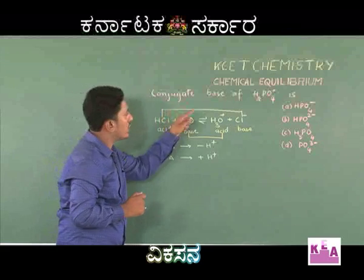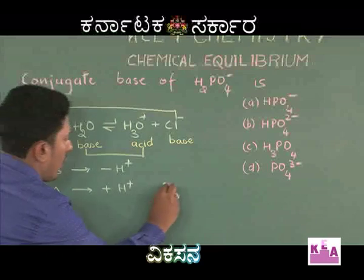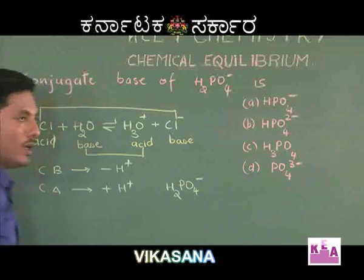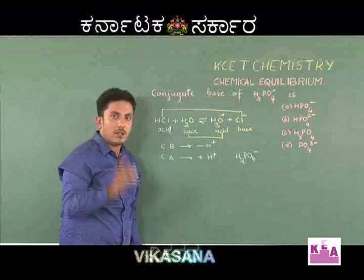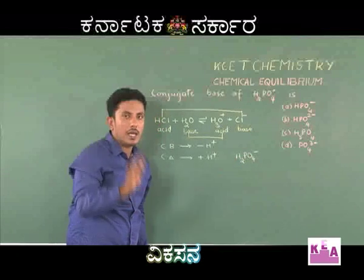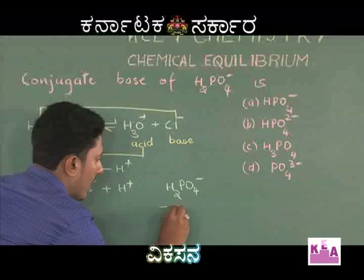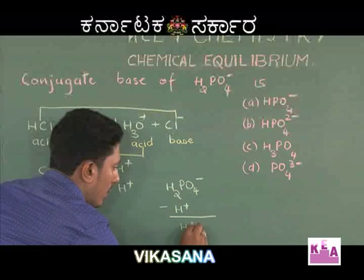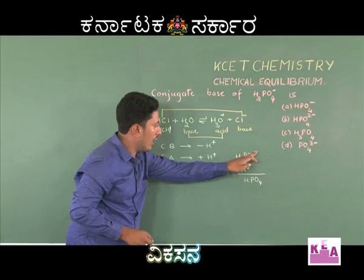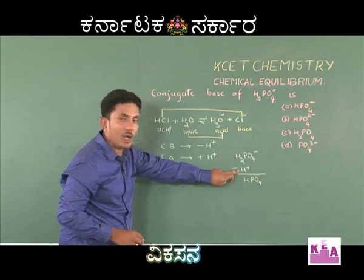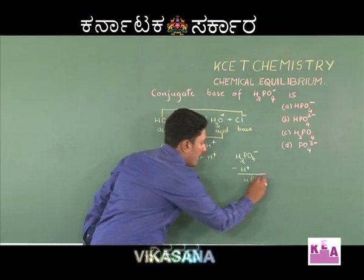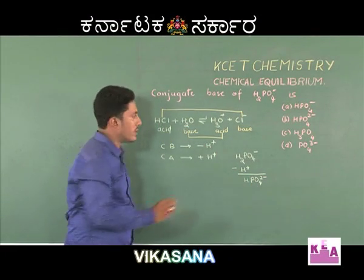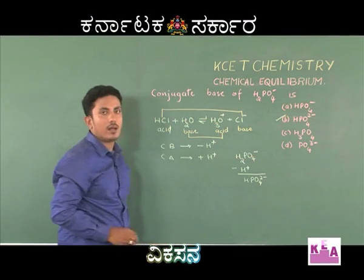Now we will go back to the question. We need the conjugate base of H₂PO₄⁻. The conjugate base of H₂PO₄⁻ can be obtained by removing a proton from it. If I remove a proton I will get HPO₄. It is already negatively charged, and by removing a proton you get another negative charge, hence it becomes HPO₄²⁻. Therefore option B is the right answer.